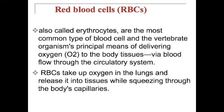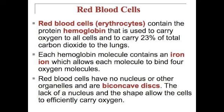Erythrocytes contain the protein hemoglobin, which is used to carry oxygen to all cells. Each hemoglobin molecule contains an iron ion, which allows each molecule to bind to four oxygen molecules. Red blood cells have no nucleus or other organelles and are biconcave discs — the lack of a nucleus and this shape allows the cells to efficiently carry oxygen.